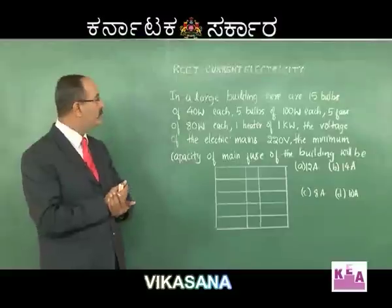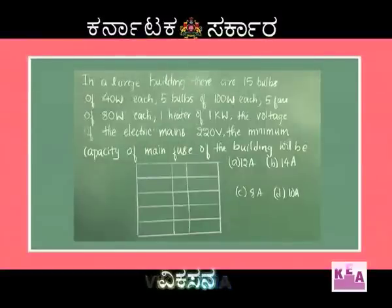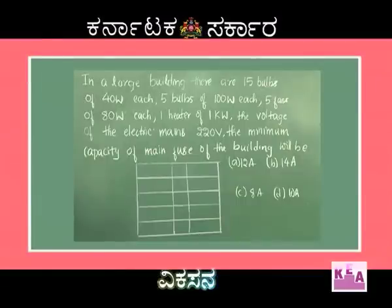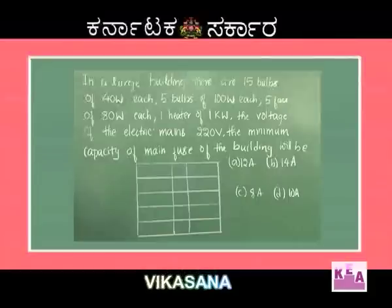The question: in a large building there are 15 bulbs of 40 watt each, 5 bulbs of 100 watt each, 5 fans of 80 watt each, and 1 heater of 1 kilowatt. The voltage of the electrical mains is 220 volts. The minimum capacity of the main fuse will be: 12 ampere, 14 amperes, 8 amperes, or 10 amperes.